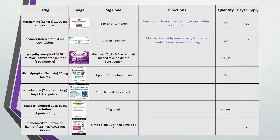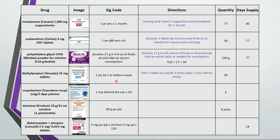Fun fact: the 3350 in polyethylene glycol refers to the mass in Daltons. This is dissolve 17 grams in 4 to 8 ounces of fluid and take by mouth daily as needed for constipation. 510 divided by 17 is a 30-day supply. Another fun fact: the brand name for diethylpropion is Tenuate, short for 'pretend you ate' — a play on words because it works as a weight loss agent. The directions are take one tablet by mouth three times daily one hour before meals. 30 tablets would last 10 days.